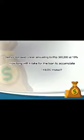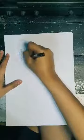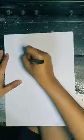Problem 5: There is a borrowed loan amounting to $360,000 at 10%. In this situation, we are looking for the time, where the given are the simple interest, principal, and the rate.